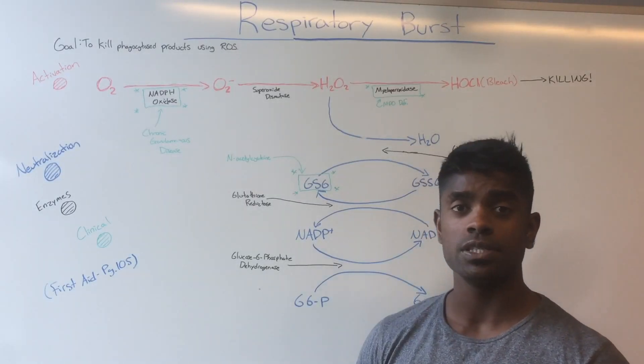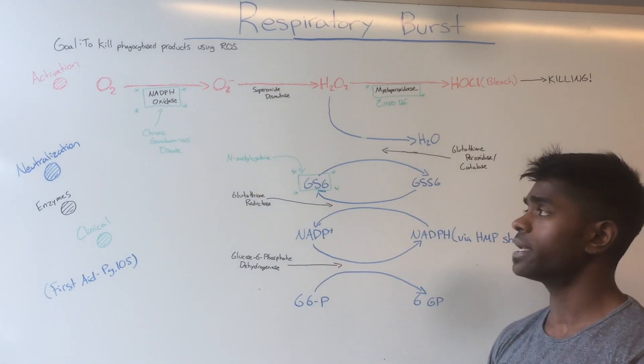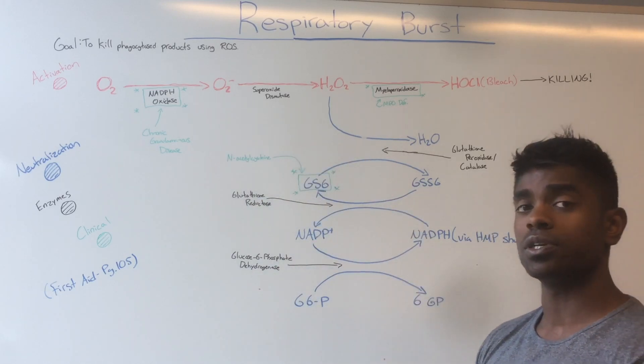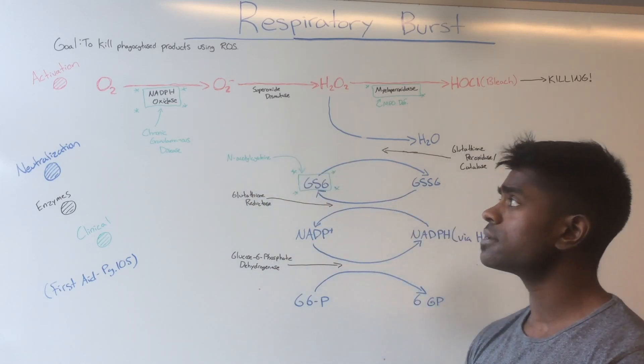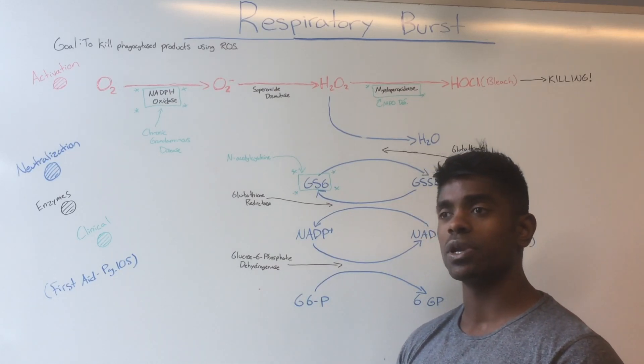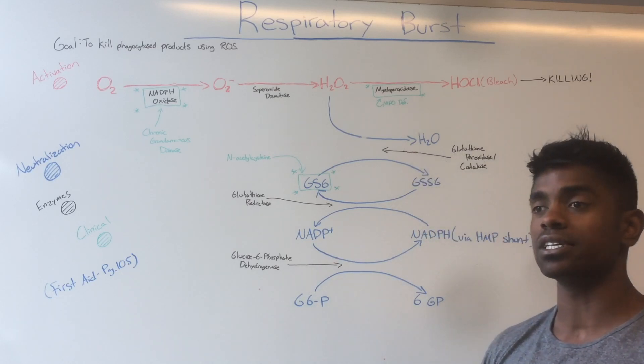For this video, we're talking about respiratory burst. This pathway is important because deficiencies in enzymes involved can result in different pathological outcomes. It's important to know that neutrophils, whenever they have phagocytosed products within them, need a way to kill these products.